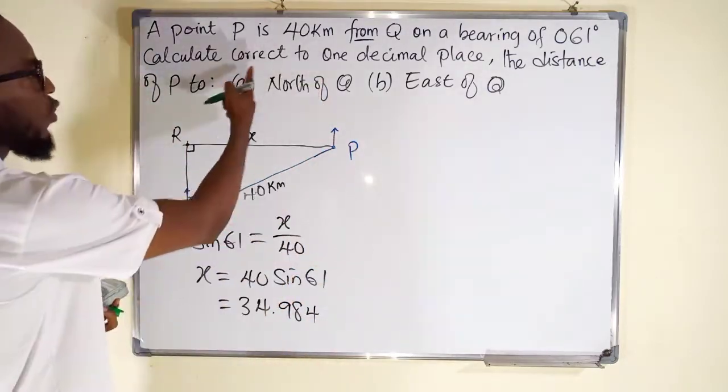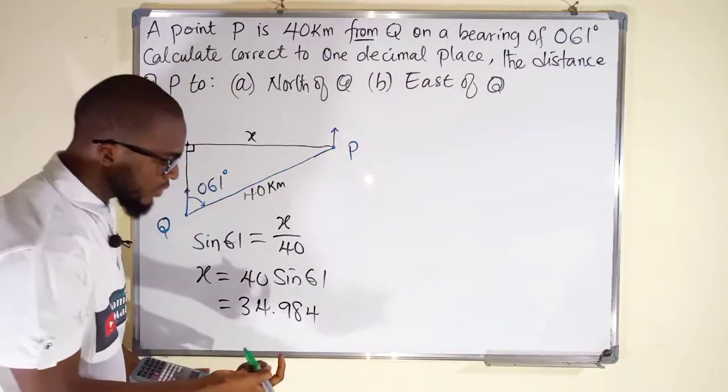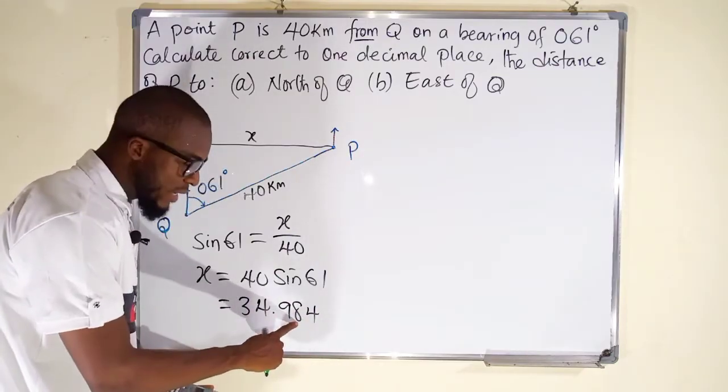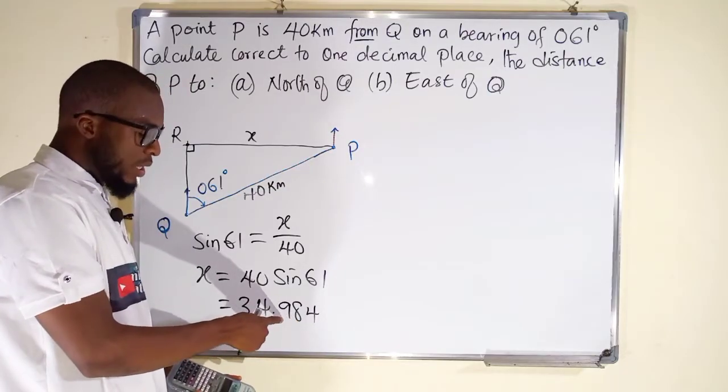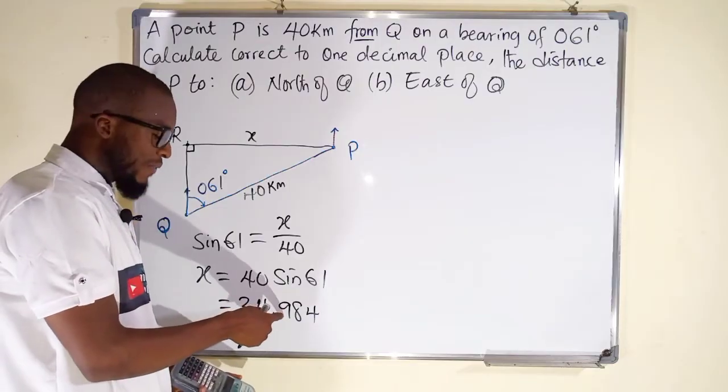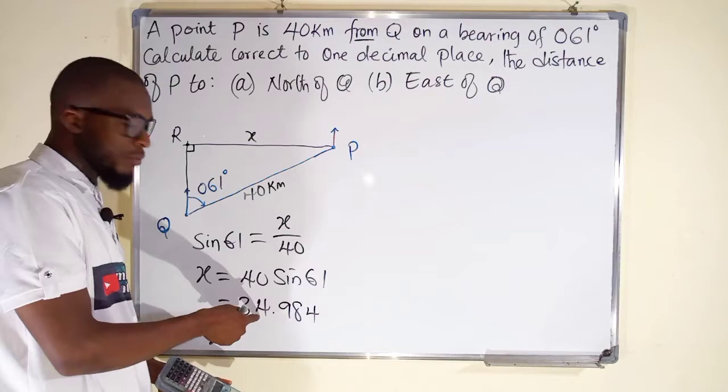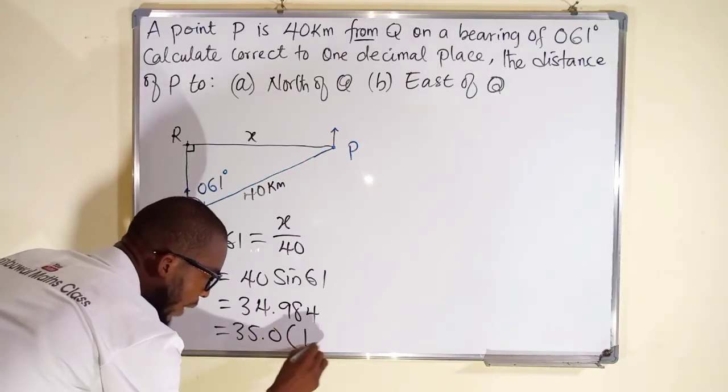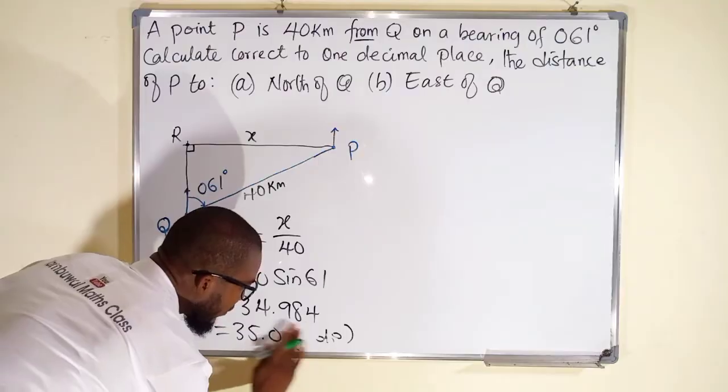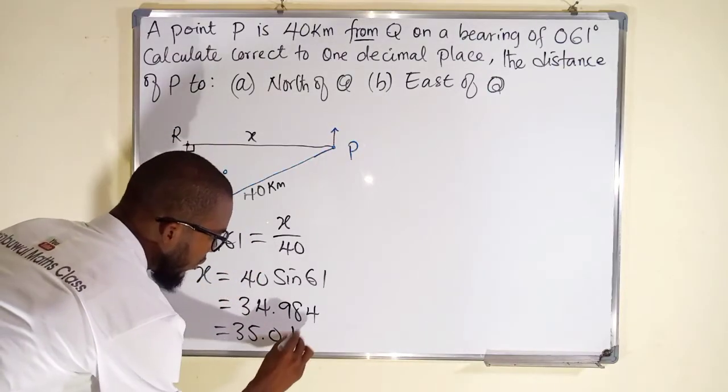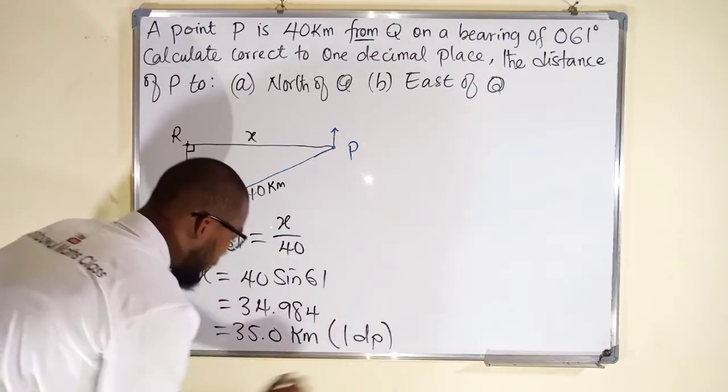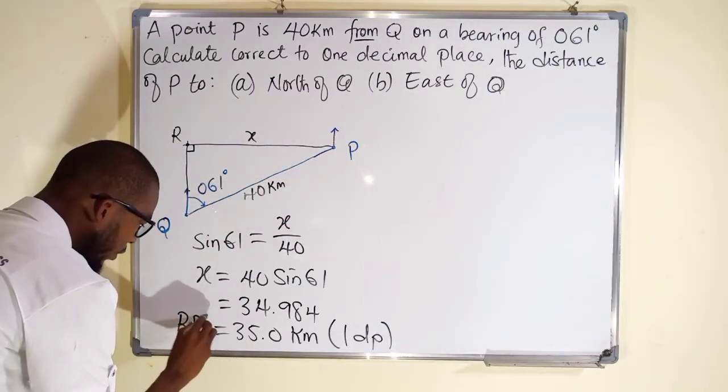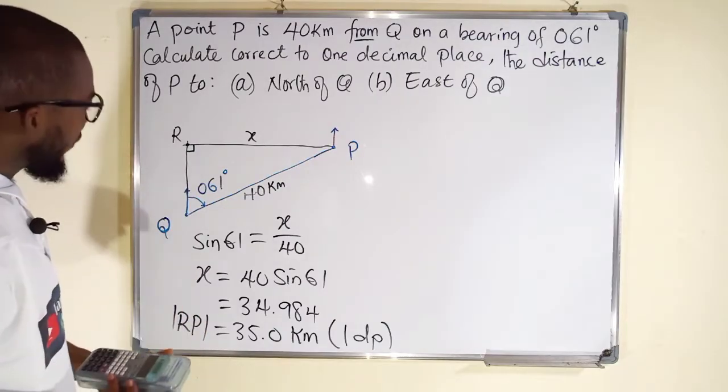But remember, from the question, it says correct to one decimal place. So we have to convert this to one decimal place, thereby taking away the two last digits. But the next value here, which is 8, is greater than 4. And hence, we have to round this up. If you round this up, it is going to be 10. And if it is 10, you have to drop 0 and add 1 to the next number behind it. And this is equal to 35.0 kilometers, 1 dp. And this x is just the distance between r to p. So I can call this RP. This is the first question, which is part A.